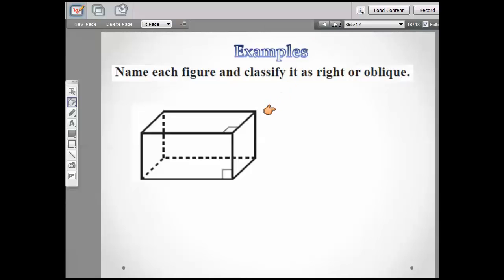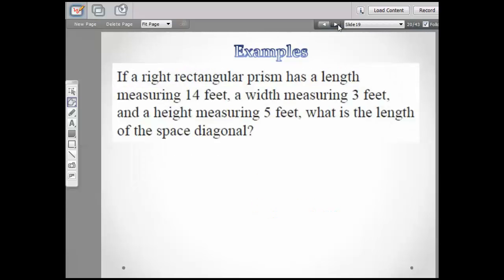This one is also a rectangular prism because if you look at these bases, they're rectangles. So that makes it a rectangular prism. Now look here, and they even put the little squares here to show us. All of the lateral faces are perpendicular. So that's going to make it a right prism.